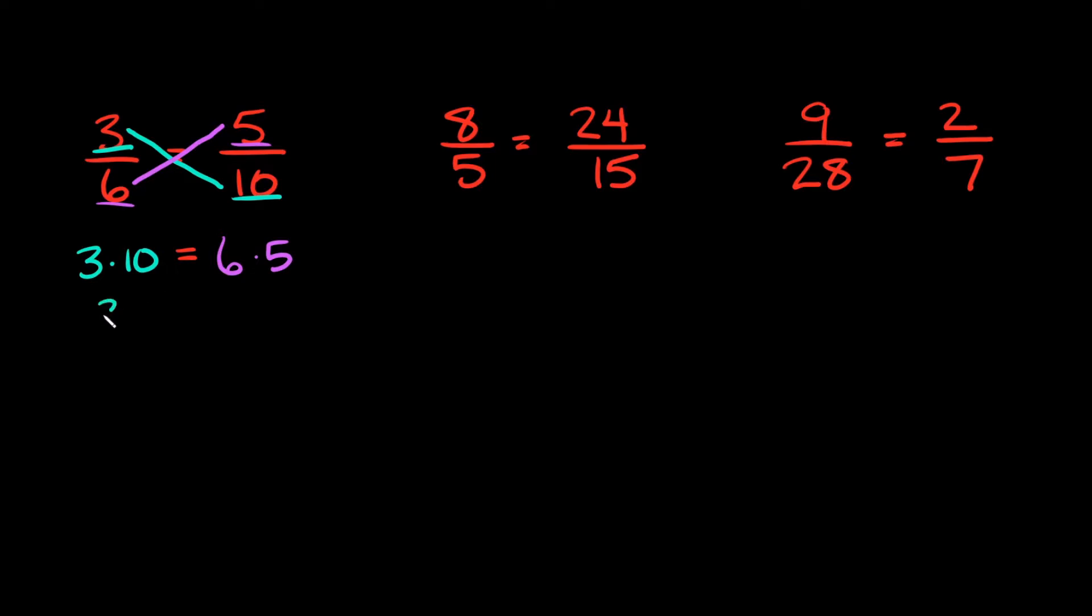Now 3 times 10 is equal to 30 and I'm going to set that equal to 6 times 5, which is also equal to 30. So as you can see we got 30 equals 30. So that means these two fractions up here, 3 over 6 and 5 over 10, are proportional. And since they're proportional that means they're actually equal to each other.